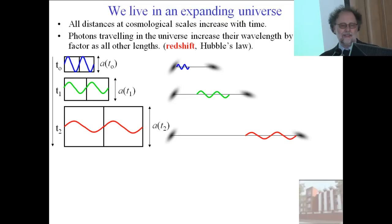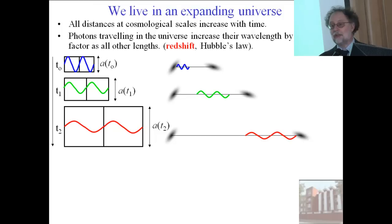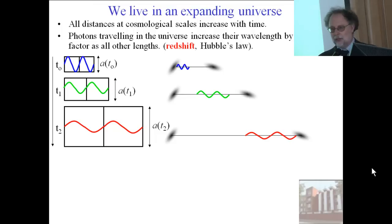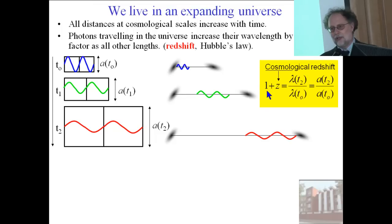For example, a blue photon coming from a distant galaxy travels in an expanding universe, and after some time we will see its wavelength increase. When it reaches our galaxy, it will have a much longer wavelength. The longer the travel, the larger the wavelength increase. We measure this as the cosmological redshift, which is the ratio of the received wavelength to the emitted wavelength — the same ratio as the scale factor of the universe at detection versus emission.